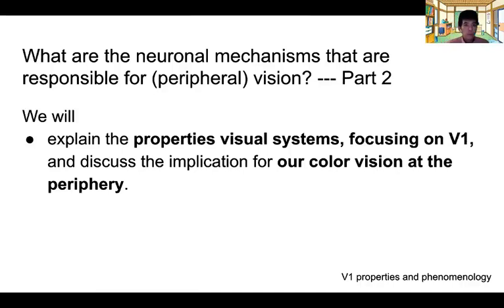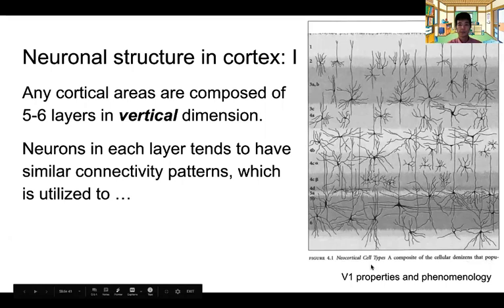So what are the neural mechanisms that are responsible for peripheral vision? And now this is going to focus on the properties in V1. This is figure 4.1, chapter 4 of the Christoph Koch book, which depicts the different types of neural cell types within V1.